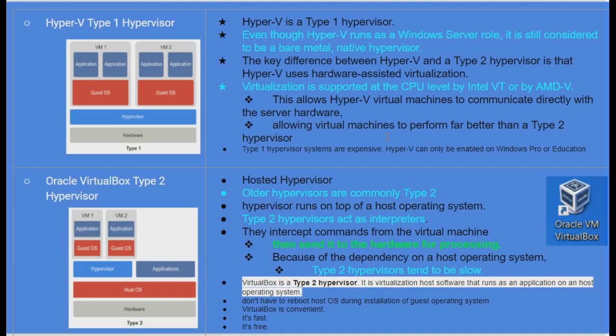Oracle VirtualBox is a Type 2 hosted hypervisor. It is an older, commonly used Type 2 hypervisor that runs on top of the host operating system. On a Windows laptop, installing Oracle VirtualBox is just installing a simple software application — it is a Type 2 hypervisor and far slower than Type 1 because it is not hardware-level. It intercepts commands from the virtual machine, passes them to the host operating system, which then handles hardware calls through system calls and translation.